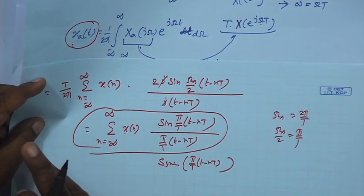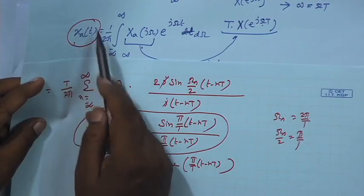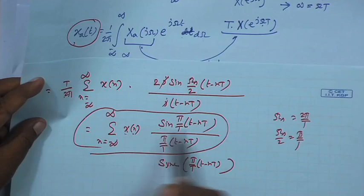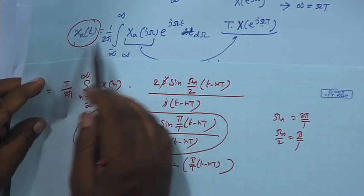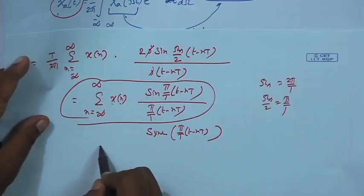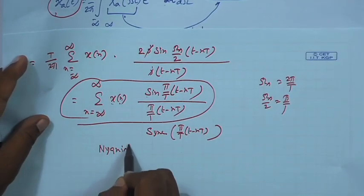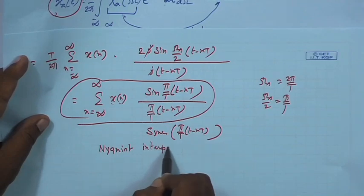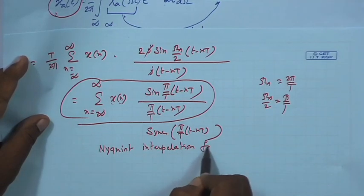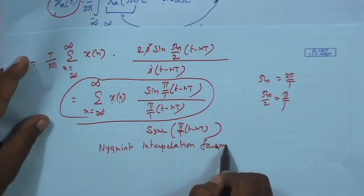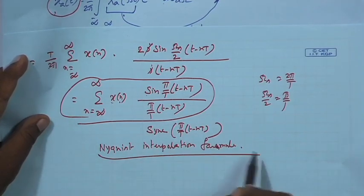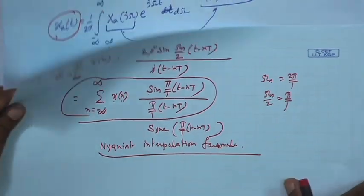If the function is band-limited, sample it at least at twice Omega_h. The resulting sequence x[n] carries all information about the full analog signal. Using those samples, you can recover the full analog function correctly using this formula, which is called the Nyquist interpolation formula.